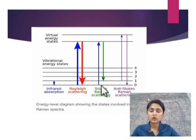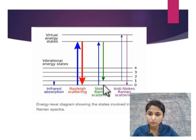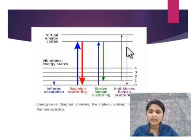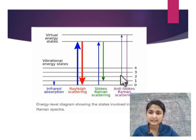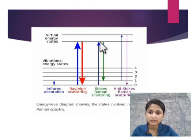The Raman shift occurs as Stokes and anti-Stokes scattering. In Stokes Raman scattering, the emitted photons have lost energy, as seen from energy level 0 to level 1. In anti-Stokes Raman scattering, the photon excites from level 0 to a virtual energy state and returns with more energy, coming back to level 0. In Stokes scattering, the photon excites from level 0 to a virtual energy state and returns with a loss of energy.